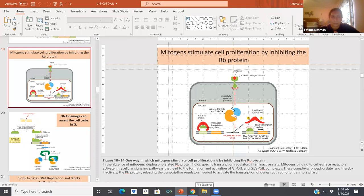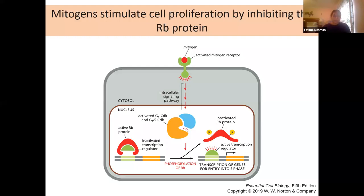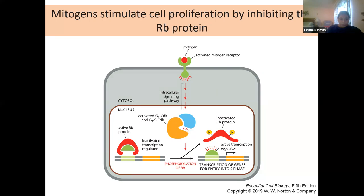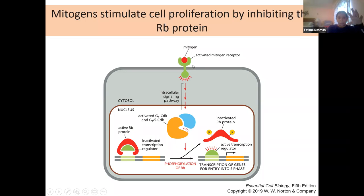If DNA damage causes cell cycle arrest in G1, cyclin D is present throughout cell cycle so that will be there regardless. For the G1 to S transition specifically, you would most likely see accumulation of cyclin E. If it was at that border where S phase was beginning, you'd see accumulation of cyclin A. But if arrested in G1 before entering S phase, you would see accumulation of cyclin E.